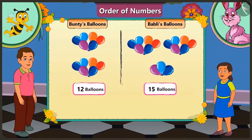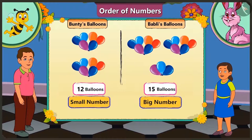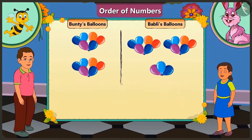So here Bubbly has more balloons than Bunty. 15 is a bigger number and 12 is a smaller number compared to it. Now tell me which number comes first in the order of counting — is it number 12 or number 15? While counting, 12 comes first, then comes 13, 14, 15. Now tell me, how many more balloons does Bubbly have?